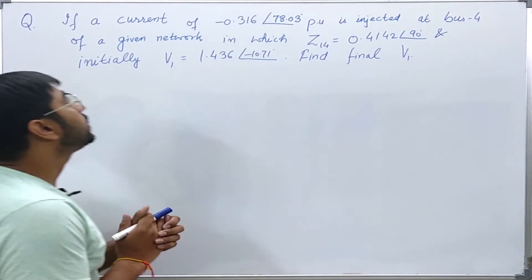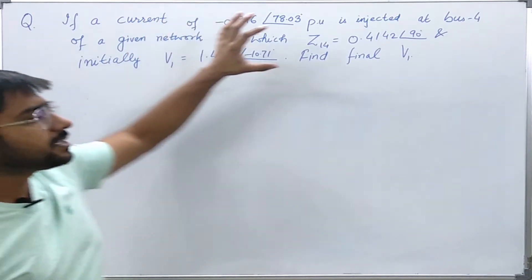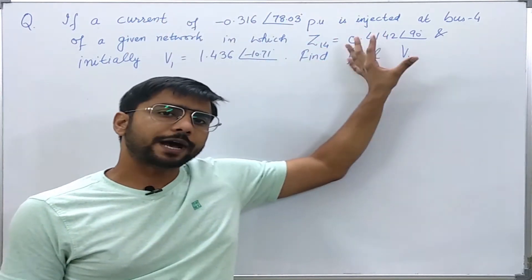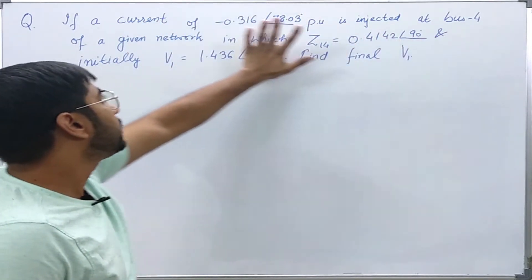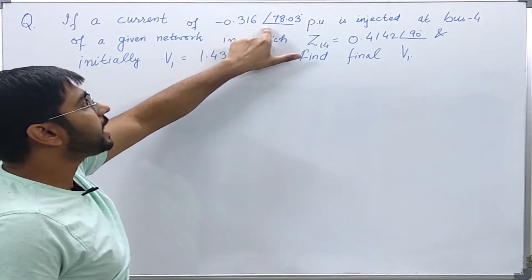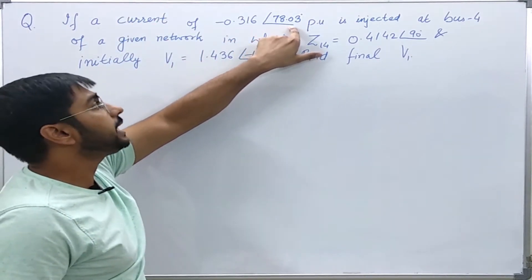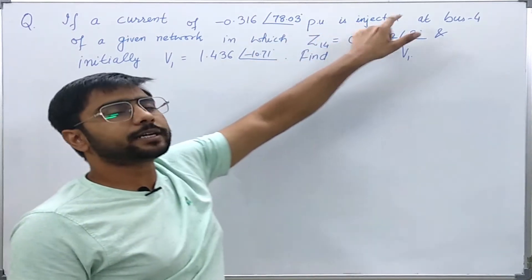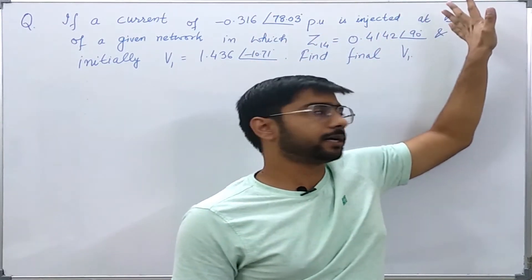What is the question? The question is that there is a 4 bus network, although I have not shown the network here. It is given that a current of minus 0.316 angle 78.03 degrees per unit has been injected at bus 4 of the network.